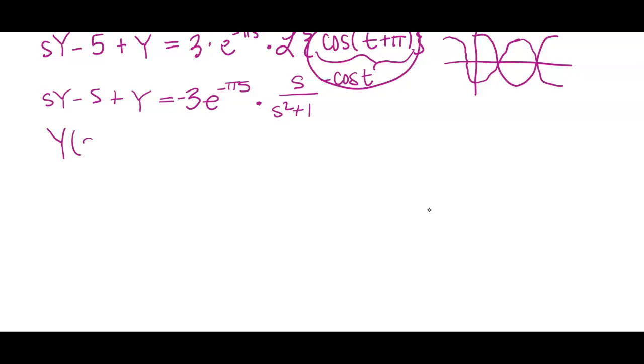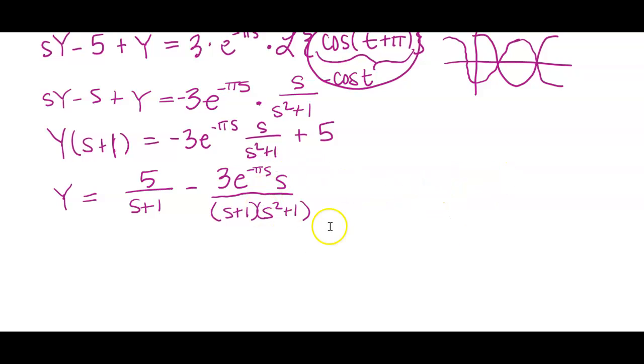All right, I have my s plus one on my left hand side. And then I have negative three e to the negative pi s s over s squared plus one. And then I'm going to add five over to this side here. I'm going to go ahead and leave these as separate pieces and have five over s plus one, just because it's positive. I'm going to pull that to the front. And then I'm going to have three e to the negative pi s all over s plus one times s squared plus one here in the bottom.